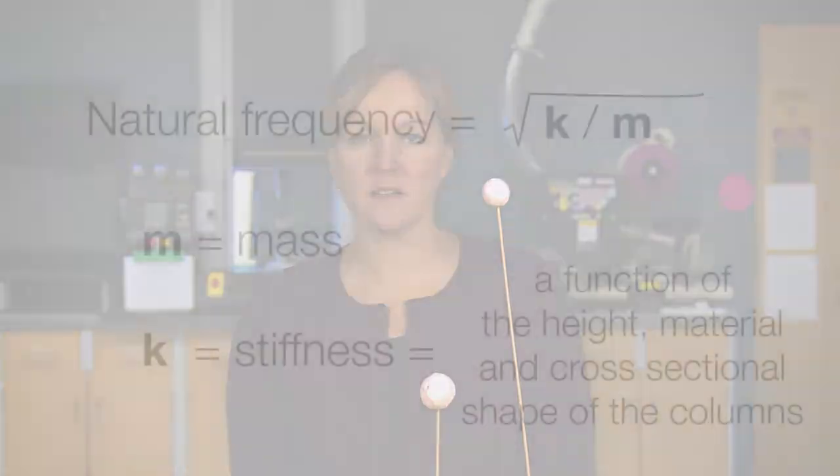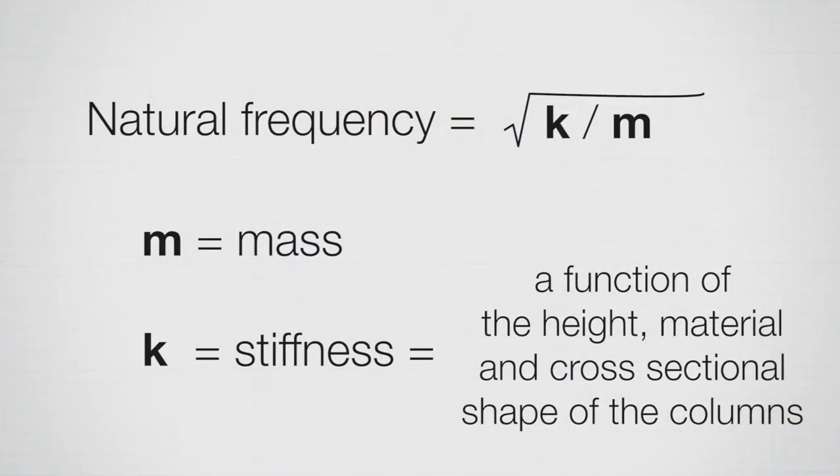There's an equation to represent this. Engineers use an equation for something called natural frequency. The equation is the square root of stiffness over mass, and that gives us the natural frequency of a building. We derive that equation using differential equations.